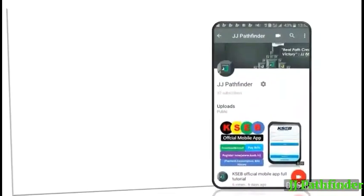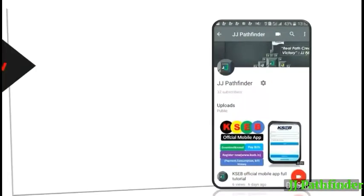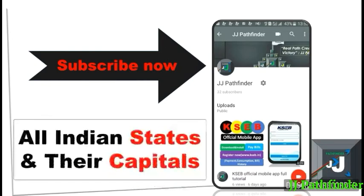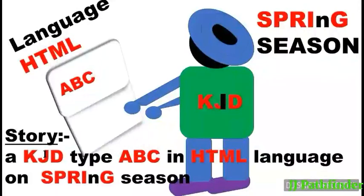Hi friends, I am JJ. Don't forget to subscribe to my channel JJ Pathfinder. Today I explain the topic: how to study all Indian states and their capitals simply by a story. The story is: a kid typed ABC in HTML language on spring season. From this story we got some code words for easily learning all states and their capitals.